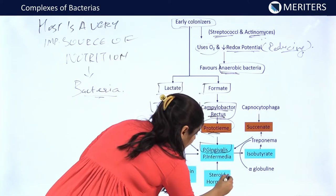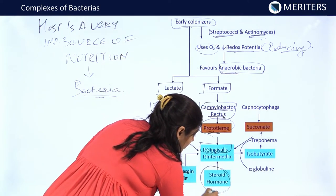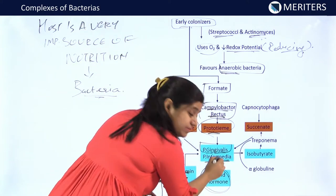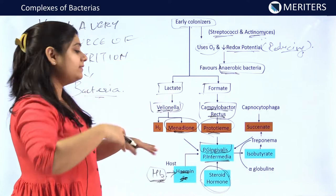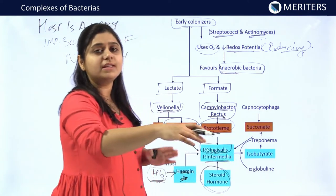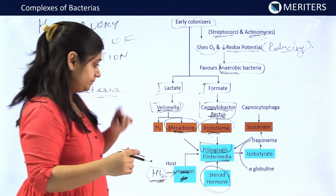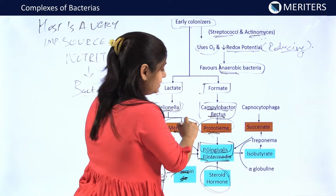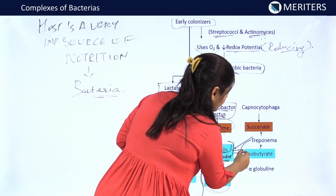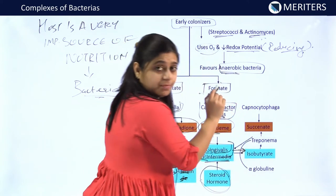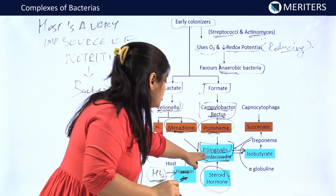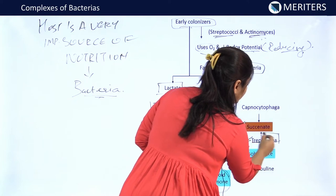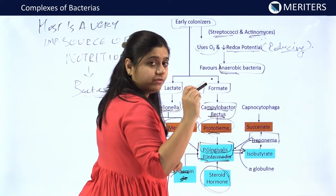The steroid hormone present in the host provides nourishment to Prevotella intermedia. It has been seen that the level of Prevotella intermedia increases with an increase in the level of steroids in the host. These two bacteria — Prevotella intermedia and Porphyromonas gingivalis — produce isobutyrate, which provides nourishment to Treponema denticola, also a bacteria of the red complex.